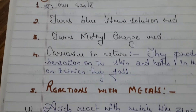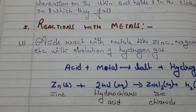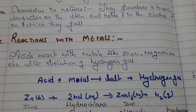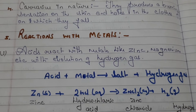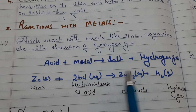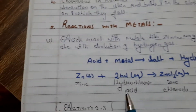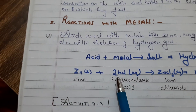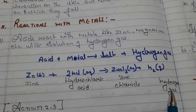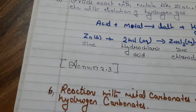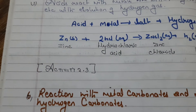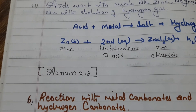Reaction with metals: acids react with metals like zinc and magnesium with evolution of hydrogen gas. Acid plus metal forms salt and hydrogen gas. For example, zinc reacts with hydrochloric acid to produce zinc chloride and hydrogen gas. You can see this in activity 2.3 in your textbook.